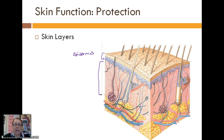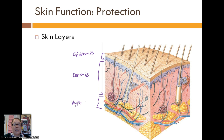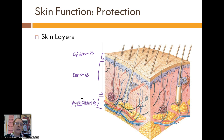The middle layer and the thickest layer is the dermis. And finally, the bottom layer — which by definition isn't really part of the skin, but we always teach it in conjunction with the skin — is the hypodermis. You can see this prefix 'hypo' meaning 'low'; it's the lowest level of the integument. Collectively, all three layers work to offer protection.